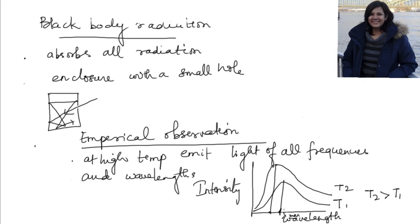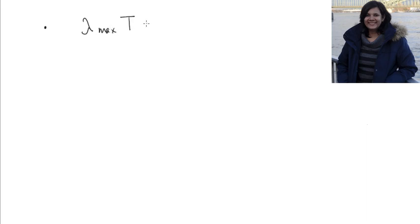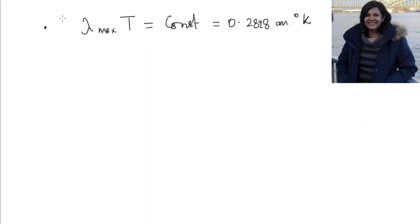What was empirically found is that the product lambda maximum into T is equal to a constant. As I go on increasing the temperature of the surface, the maximum wavelength decreases such that lambda maximum times T is a constant, and the value experimentally observed for this constant was around 0.2898 centimeter degree Kelvin. This was observed by Wien and termed as Wien's displacement law.